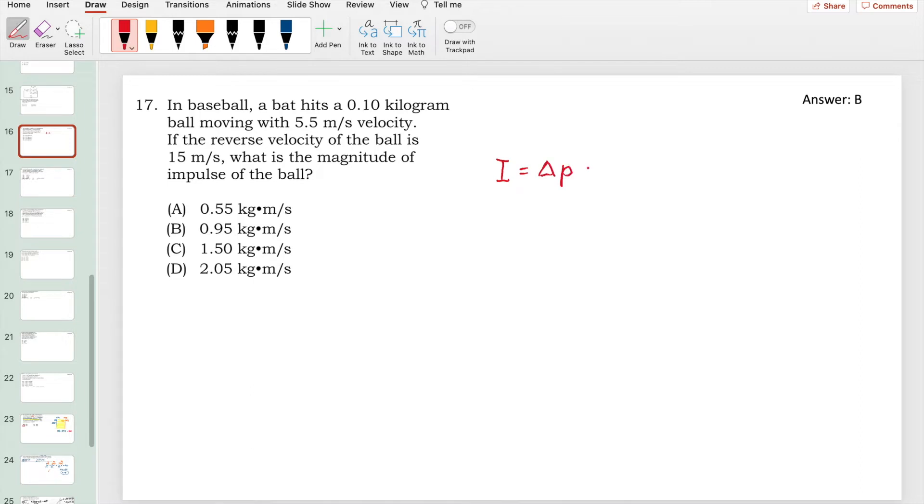So to compute for the impulse here, we follow the formula of impulse, the change in momentum. That's mass times VF minus VI, the final velocity minus the initial.